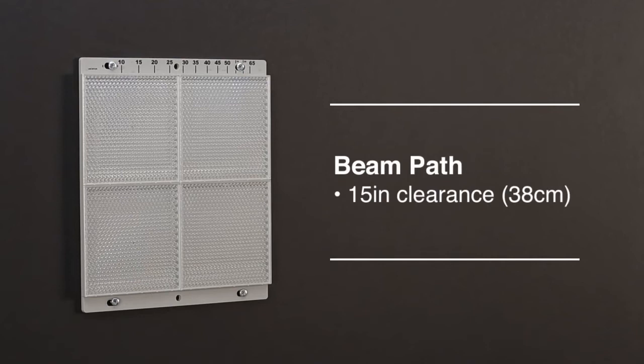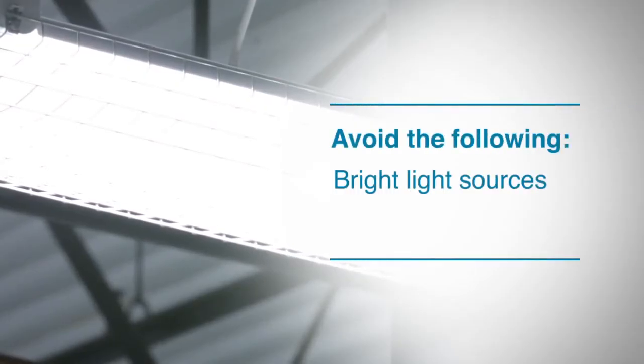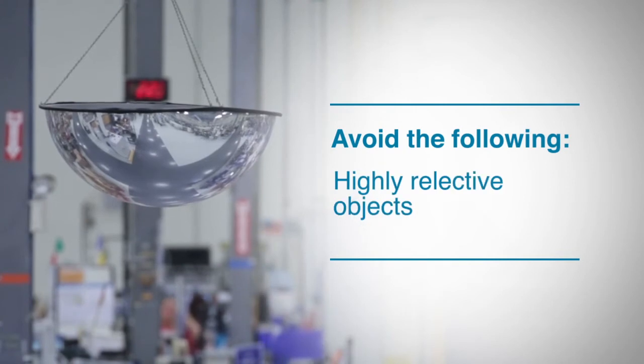Keep in mind that the detector needs a clear path with at least 15 inches between the beam path and any obstructions. Bright light sources or highly reflective objects should be kept away from the beam path, and direct sunlight into the beam or the reflector should be avoided.